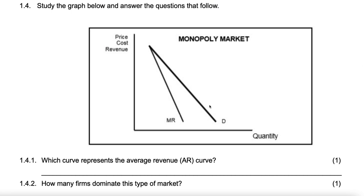In this particular scenario — Monopoly — why is it that D and MR are not equal? The answer is because each additional unit is sold at a lower price. And for Perfect competition, they are equal because each additional unit is sold at the same price.